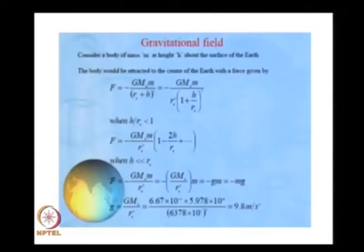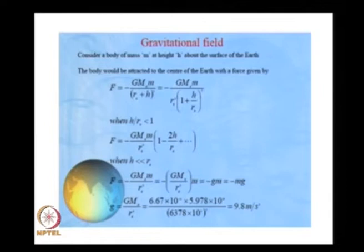F = G × m_E / (r_E + h)², and when we evaluated this we found F = −mg and got the value of g as 9.8 m/s². This also we derived in the last class.